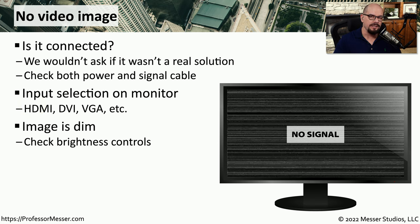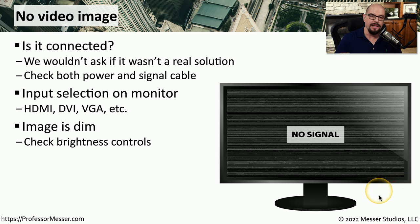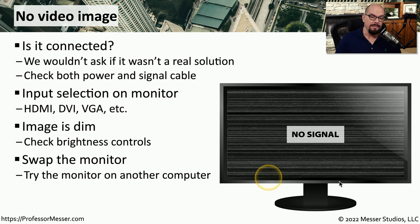If you look closely at the display and you notice there is a very dim image, then it may be that the brightness or contrast needs to be turned up on the display. There are often buttons on the display itself that allow you to customize those settings. And ultimately, it may be that the monitor has simply failed, and replacing it with one from a known good system can tell you whether the issue is with the monitor or with something outside of the monitor's configuration.